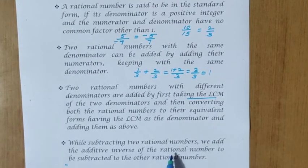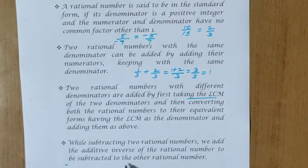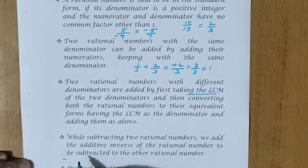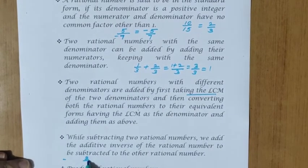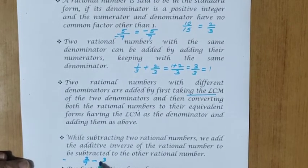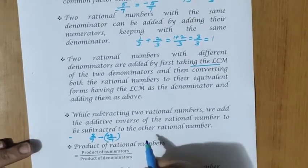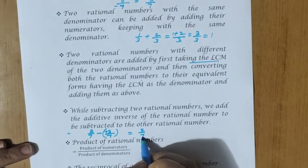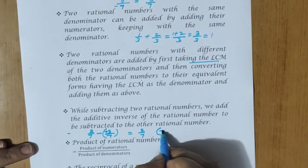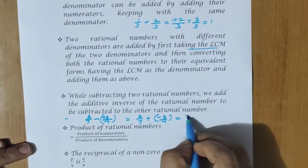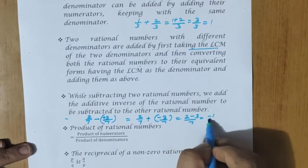When subtracting two rational numbers, we add the additive inverse of one rational number to the other. For example, 2 by 7 minus 3 by 7: we take the additive inverse of plus 3 by 7, which is minus 3 by 7. The subtraction changes to addition: 2 by 7 plus minus 3 by 7 equals 2 minus 3 by 7, which equals minus 1 by 7.